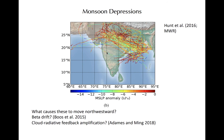Monsoon depressions are common in the Bay of Bengal and generally form along monsoon troughs. After developing, they tend to move toward the north and west and are additional features that contribute to heavy rainfall in Bangladesh and eastern India. Lines in this figure follow the tracks of monsoon depressions from the Bay of Bengal toward the west, and brighter colors denote deeper, stronger depressions. The exact mechanisms responsible for their northwestward motion are as of yet unclear.